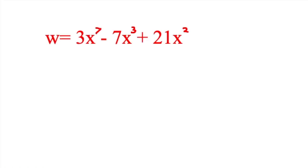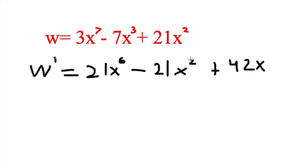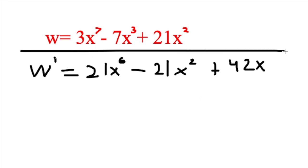Looking at this example, we have 3x to the 7th minus 7x cubed plus 21x squared. We can use the sum and difference rule along with the power rule for each term. So w prime: for 3x to the 7th, we bring the 7 down times 3, giving us 21x to the 6th. Next, 7x cubed gives us 21x squared. Finally, 21x squared gives us 2 times 21 which is 42x. There are no like terms, so this is our final answer.